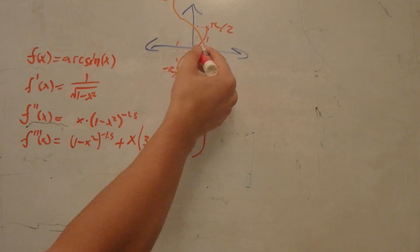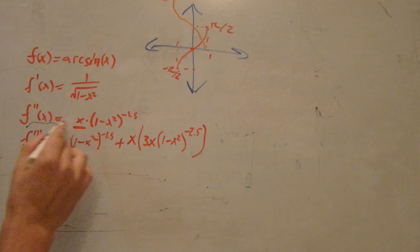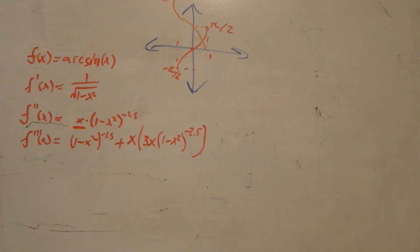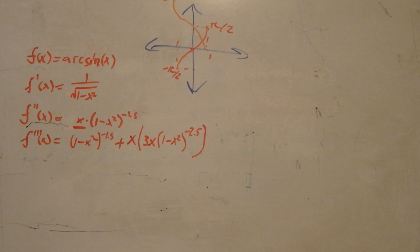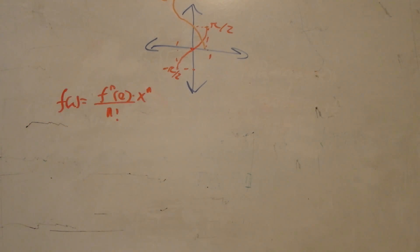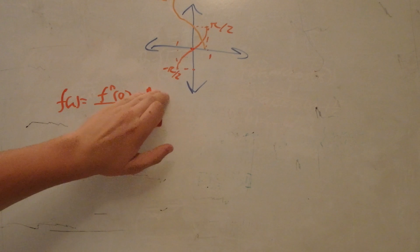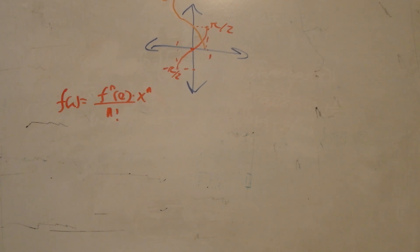Arc sine of 0 is, as in the graph, 0. But then we're going to notice that the second derivative has a sitting x right here, so that's also going to be 0. We're going to notice that this is going to have even derivatives equaling 0, which is always frustrating because it means you're going to have to write out a ton of terms to figure out the pattern. Just a reminder: the Taylor series is f of x equals the nth derivative at 0 times x to the nth power divided by n factorial, and I'm going to write out the first few terms.